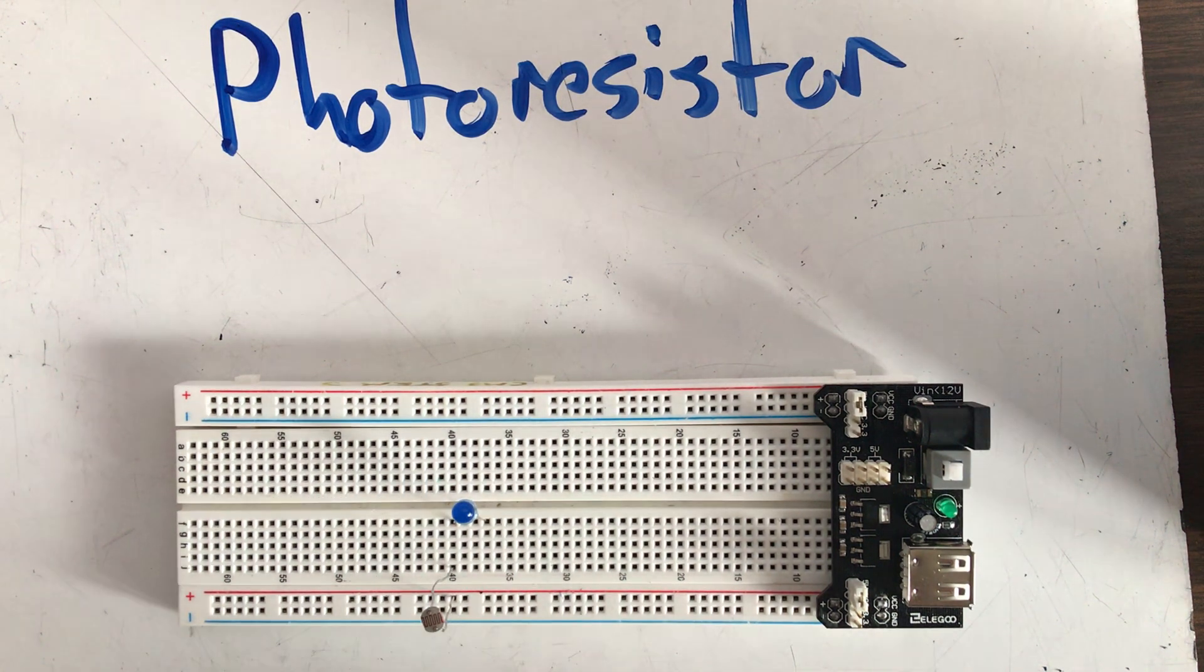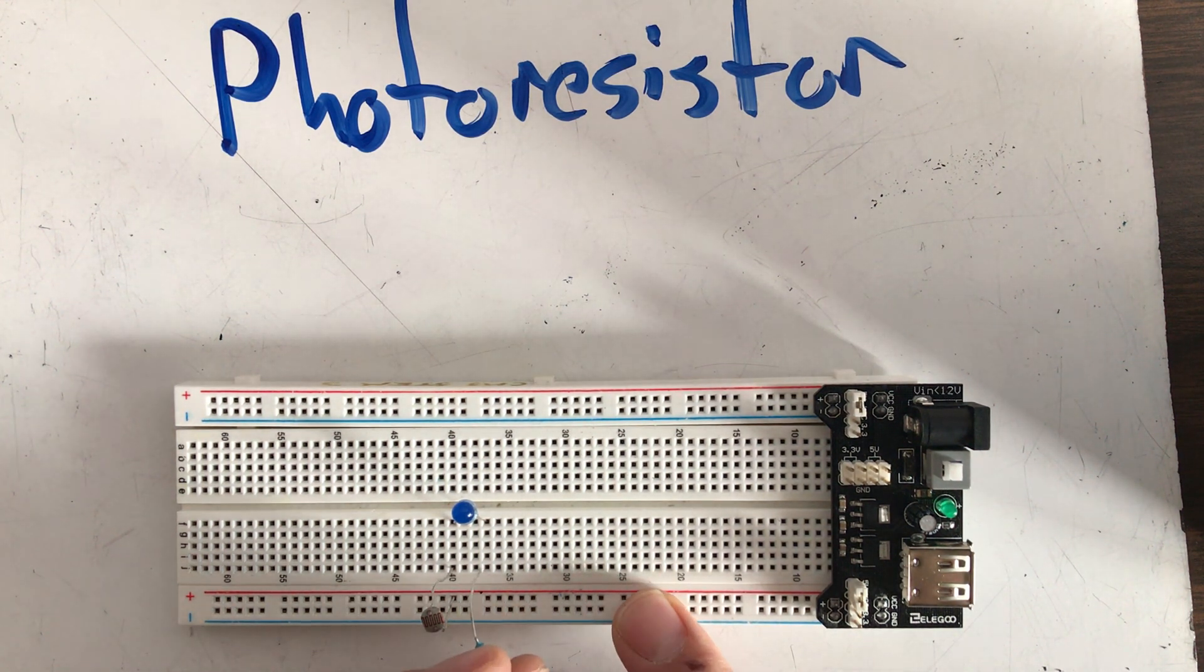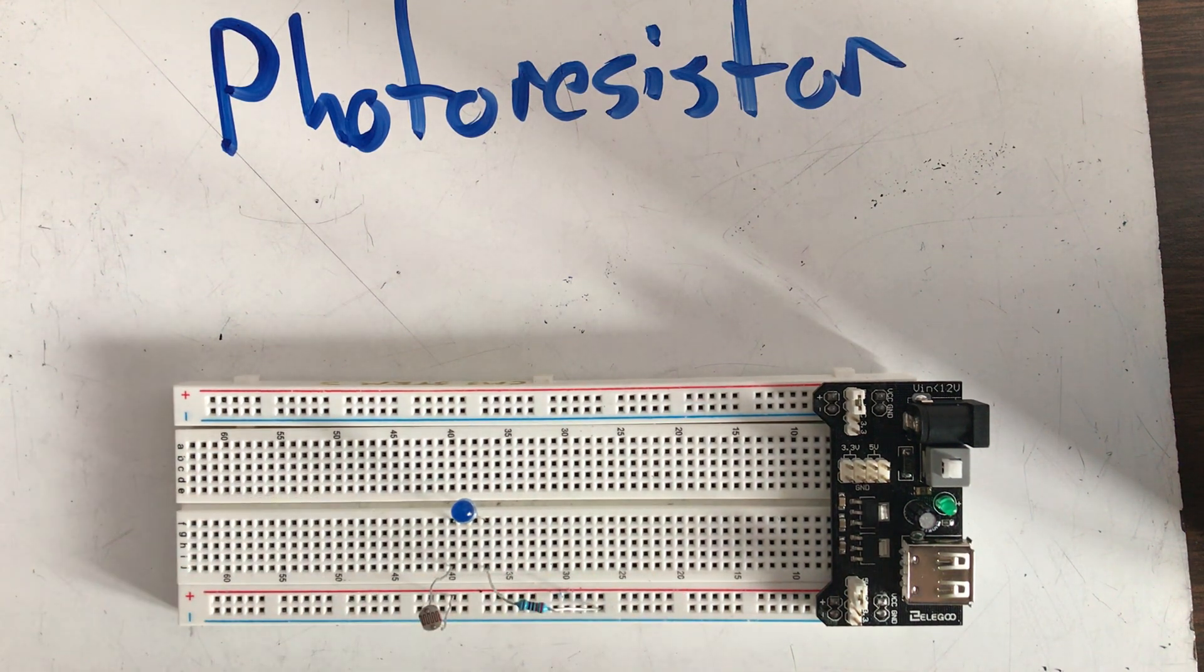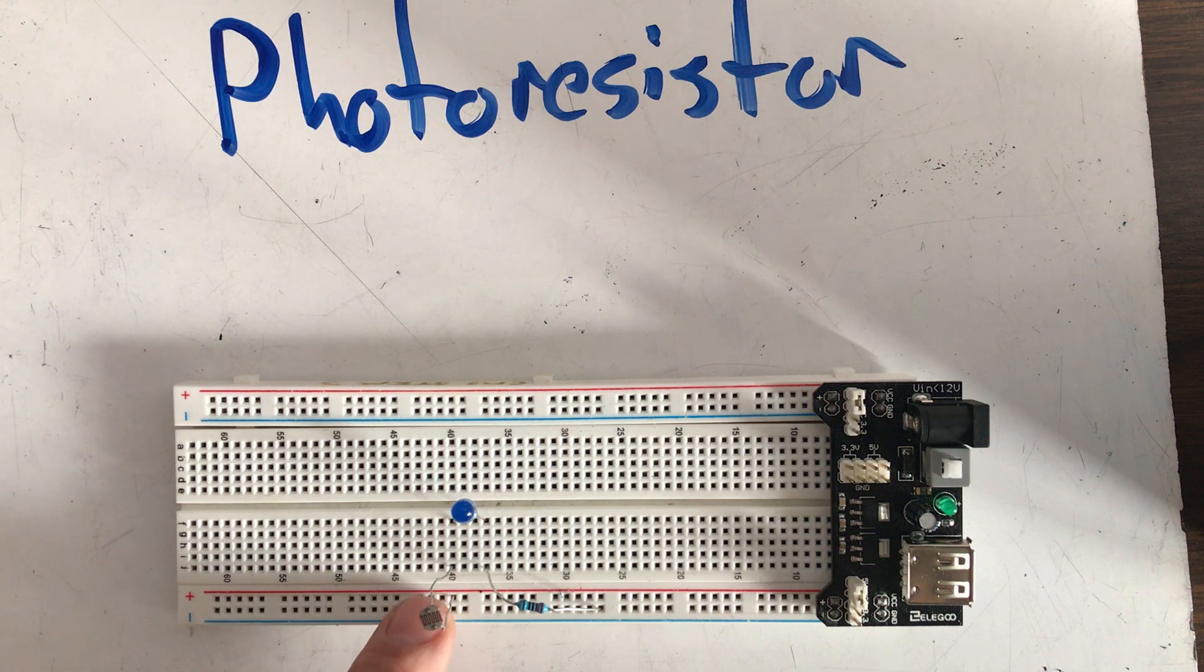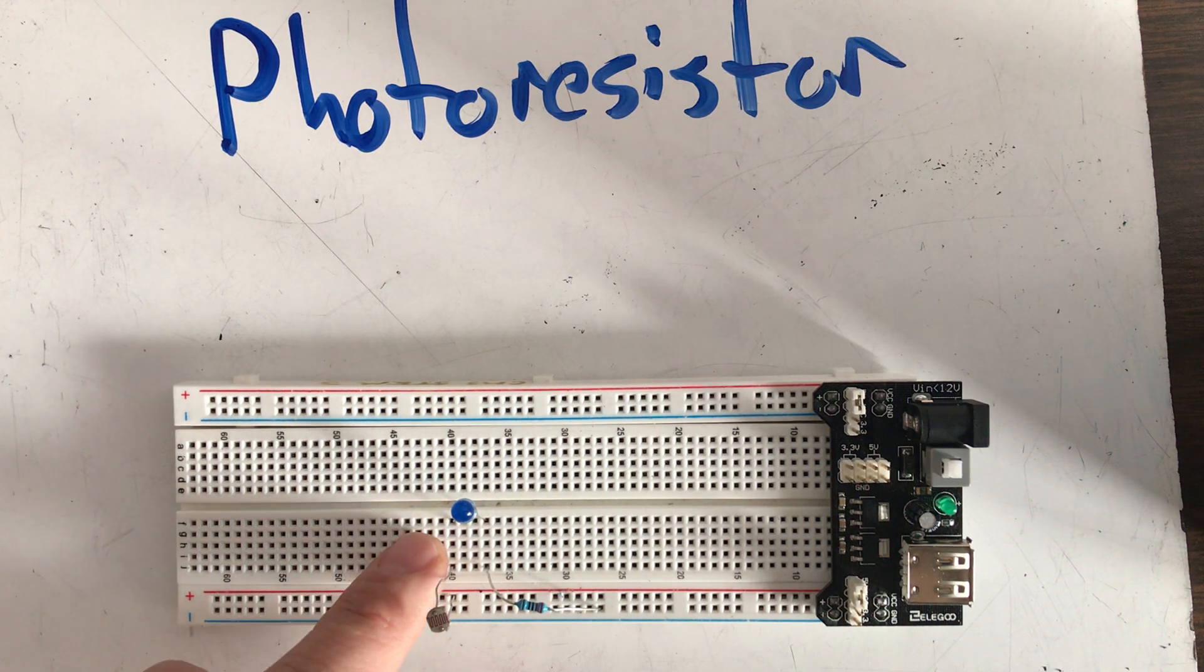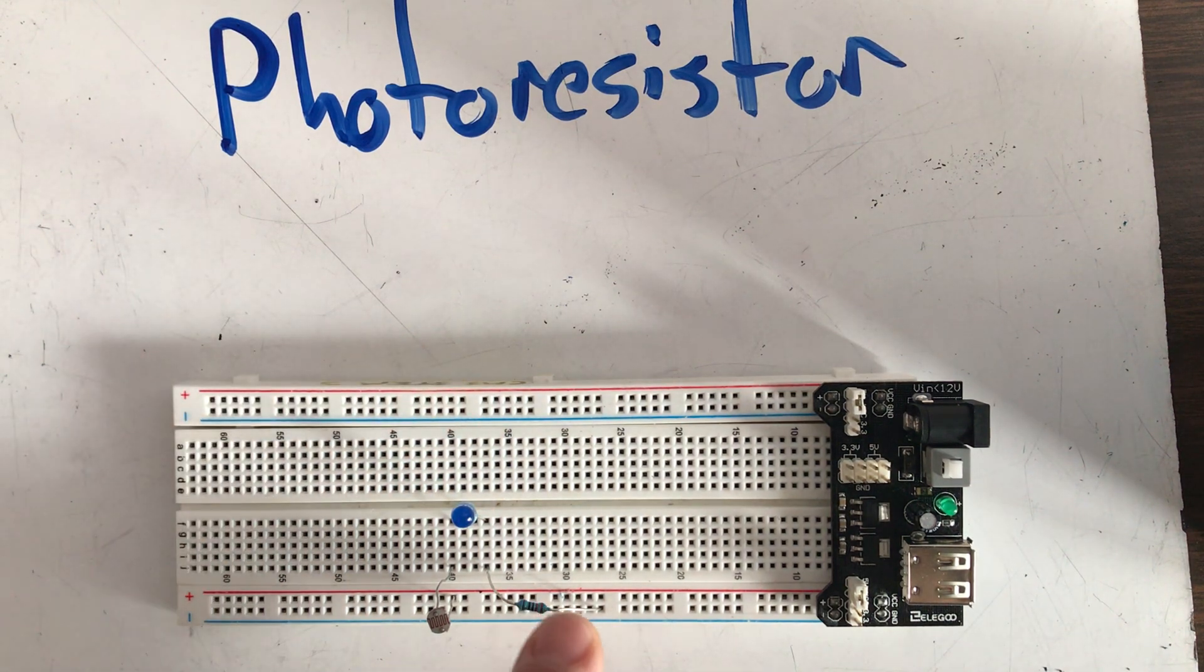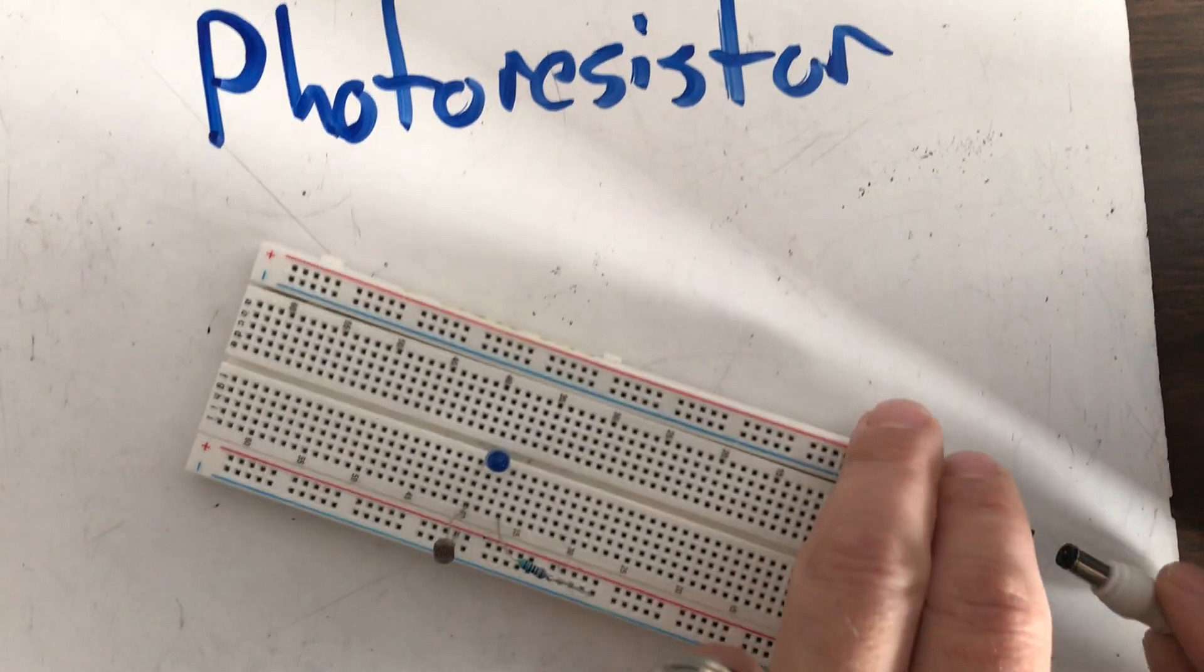And so now, that current is right there in row 37. That current is positive. And if you remember, positive current really wants to go back to negative. So I'm going to attach row 37 to the negative. Now we have a circuit. We have a path from positive to negative. It's going to flow through the photoresistor, then through the LED, and then through this other resistor back to negative. So let's look.